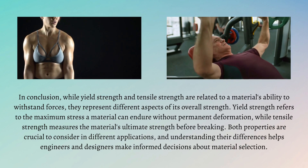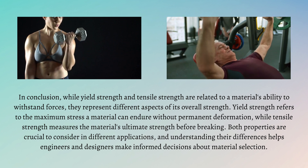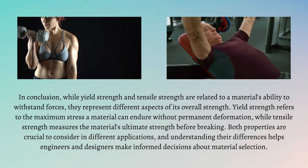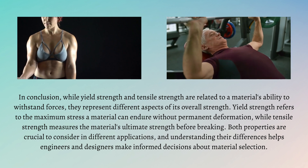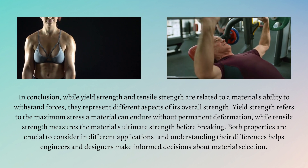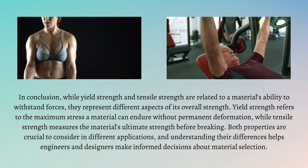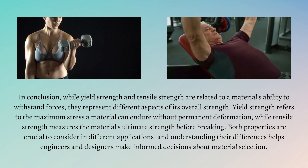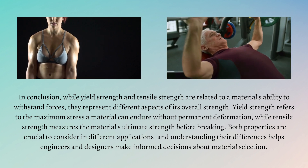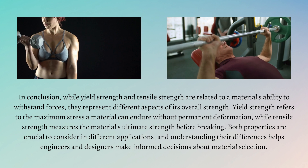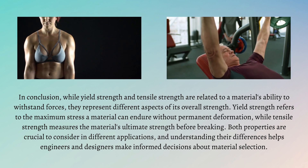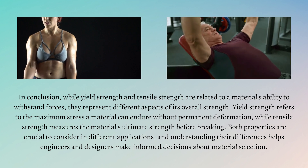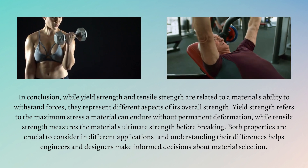In conclusion, while yield strength and tensile strength are both related to a material's ability to withstand forces, they represent different aspects of its overall strength. Yield strength refers to the maximum stress a material can endure without permanent deformation, while tensile strength measures the material's ultimate strength before breaking. Both properties are crucial to consider in different applications, and understanding their differences helps engineers and designers make informed decisions about material selection.